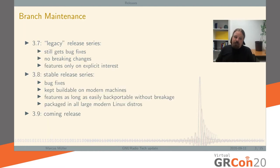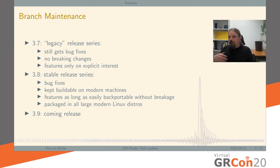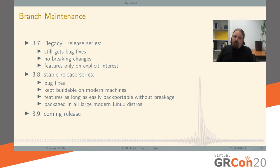We've got 3.7, which is our still-maintained legacy release series that still gets bug fixes, but we're very conservative about breaking it. Why? Because it's our legacy code — there are six years of development depending on 3.7, and we have no intention of hurting those users. On the other hand, we can't really add new features because the state of the code doesn't allow us to efficiently extend it without breaking anything.